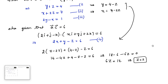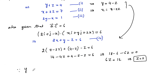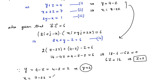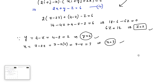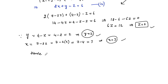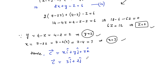Substituting back z equals 2: y is equal to 4 minus z, which is 4 minus 2, so y equals 2. And x is equal to 7 minus 2z, that is 7 minus 4, so x equals 3. Therefore vector c is equal to xi plus yj plus zk, which is 3i plus 2j plus 2k.